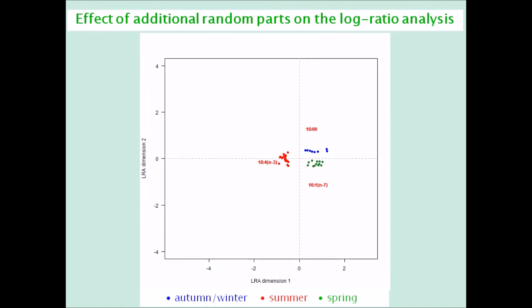But as the random parts are added, the separation is degraded, especially between autumn and spring on the second axis.